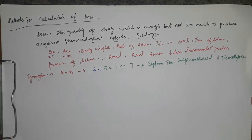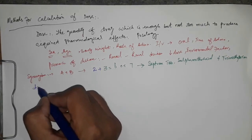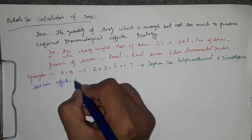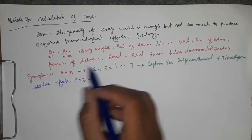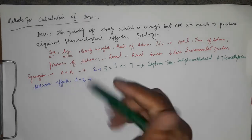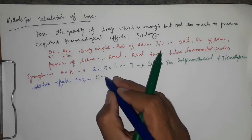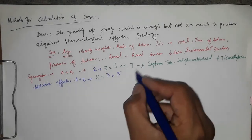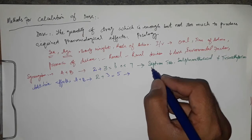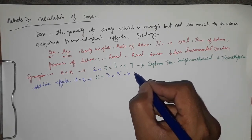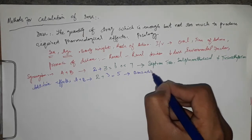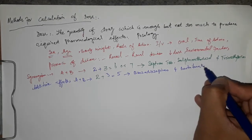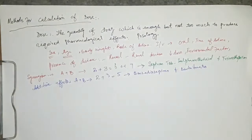Another type of drug interaction is the additive effect. If drug A has an effect of 2 and drug B has an effect of 3, the combined net effect is 5. This is called an additive effect. For example, if we give benzodiazepines and barbiturates together, they will have additive effects.